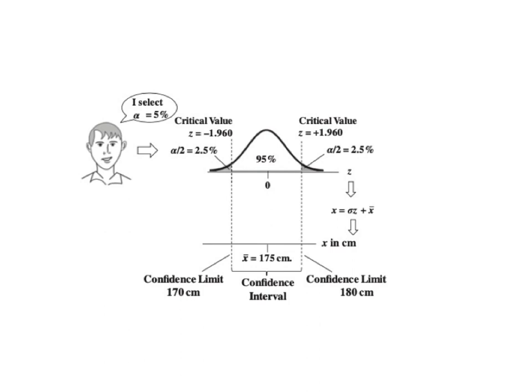The confidence interval method can be used to determine whether there is a statistically significant difference between our sample statistic and a specified value for a parameter — say, a historical mean or a target mean for a population or process. If the specified value is within the confidence interval, we conclude that there is not a statistically significant difference. There are individual articles in the book for all these concepts, including alpha, critical value, level of confidence, and test statistic. I will do videos on confidence intervals after this video.